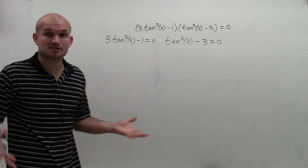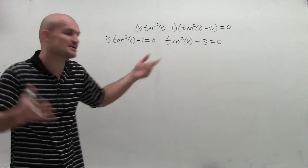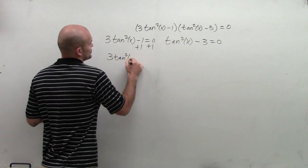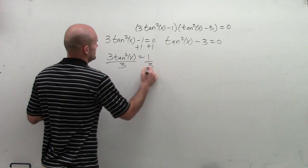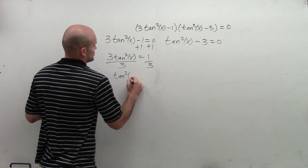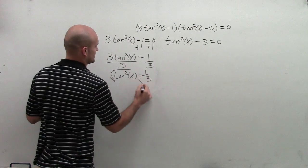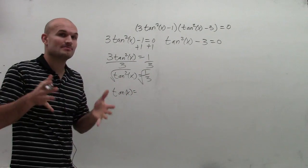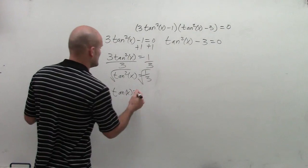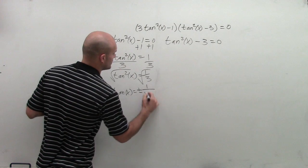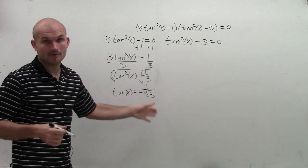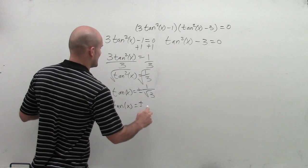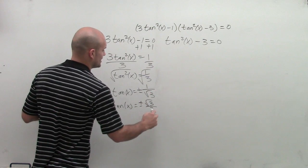So now what I'm going to do is just solve for each one of these, because you can see now, I can isolate my terms. So the first thing I do is add 1 to both sides. So I get 3 tangent squared of x equals 1, divide by 3. Tangent squared of x equals 1 third. Now take the root. So therefore, tangent of x, remember, equals plus or minus. Whenever you introduce the square root, you've got to make sure you introduce plus or minus 1 over the square root of 3. Now we can simplify that by rationalizing the denominator, I get square root of 3 over 3.